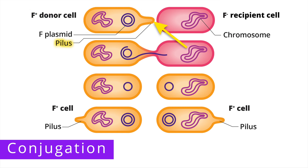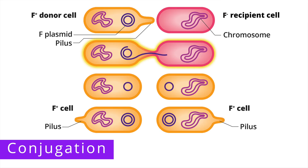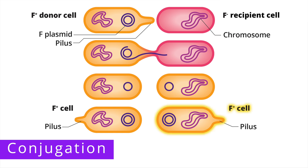The F-pilus, which is also called a conjugation pilus, is a thin tube-like appendage used to transfer genetic information from one cell to another. An F-negative, or recipient cell, is a bacterial cell that lacks an F-plasmid. During conjugation, the pilus of the donor cell attaches to the recipient cell and then contracts, which draws the cells together. A cytoplasmic bridge then forms between the two cells and one strand of the double-stranded F-plasmid is transferred from the donor cell to the recipient cell. The donor cell then synthesizes a complementary strand to restore the plasmid, and the recipient cell also synthesizes a complementary strand for the plasmid and is now an F-positive cell.